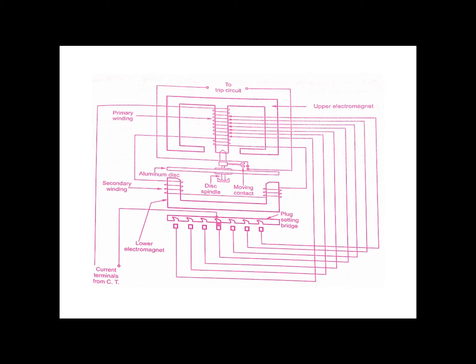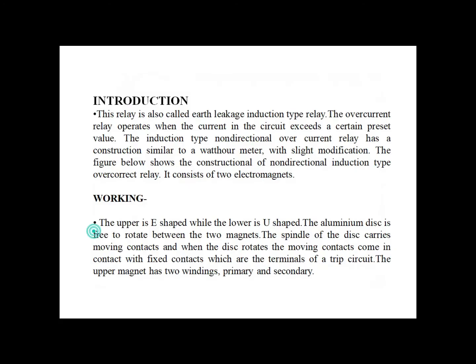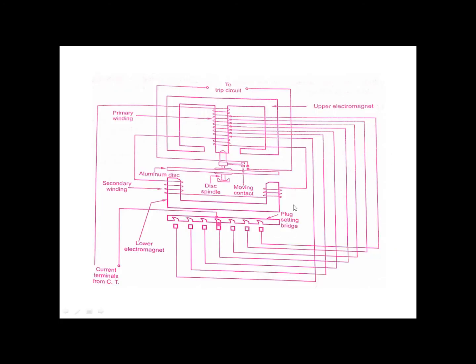The tappings are connected to a plug setting bridge (PSB). With the help of this plug setting bridge, the number of turns of the primary winding can be adjusted, so that the desired current setting for the relay can be obtained.